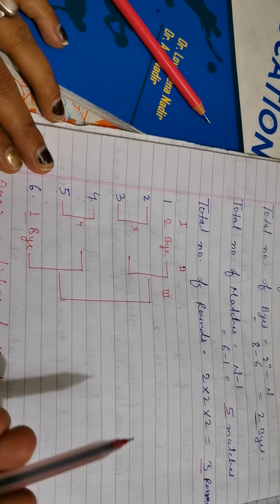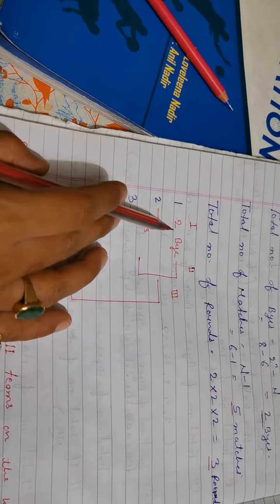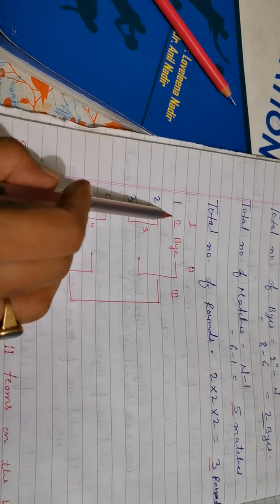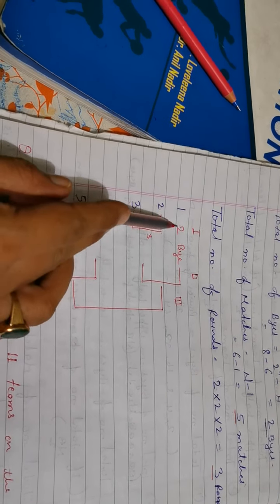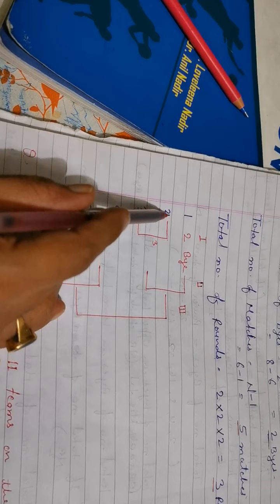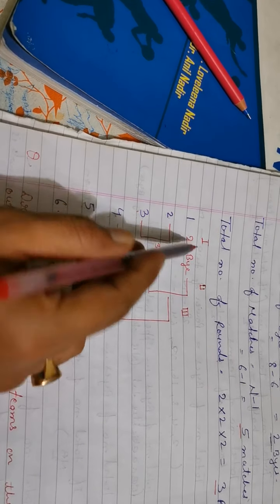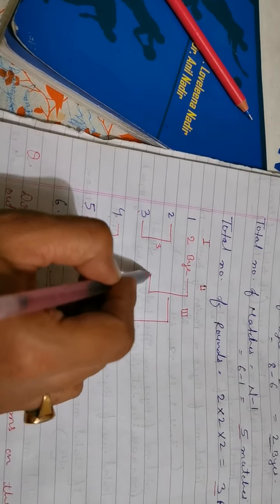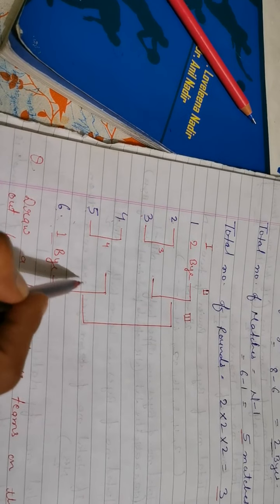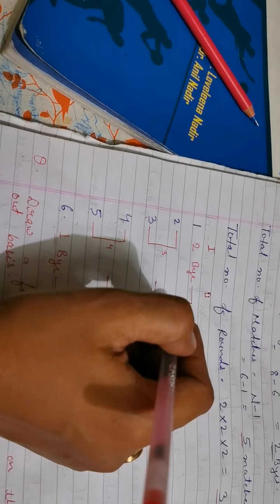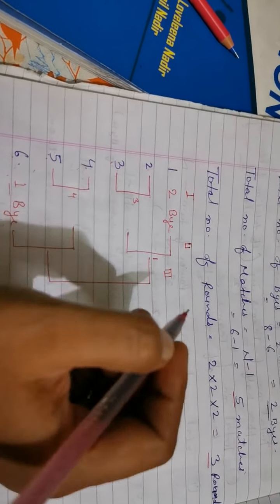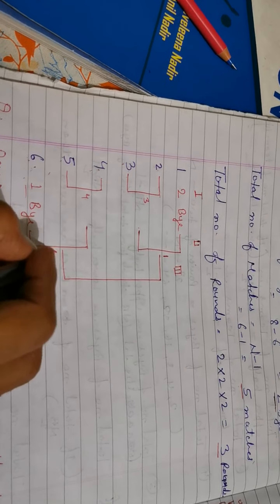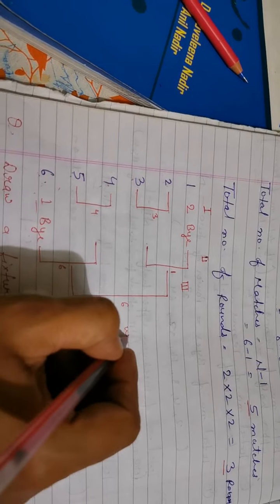In the second round, the winners from the first round play the bye teams. Suppose the results give winners from each pair, and they proceed to the final round. The final produces the overall winner. This is how a fixture for 6 teams (less than 8) is constructed without dividing into halves.